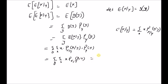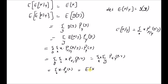But this can be rewritten by just changing the order of summation. We have the summation over x of x times the summation over y of the joint mass function p(x, y). The summation of the joint mass function over all values of y is, by definition, the marginal probability mass function of X. So we have the summation over x of x times the marginal probability mass function of X, which by definition is equal to the expectation of X.